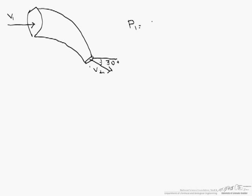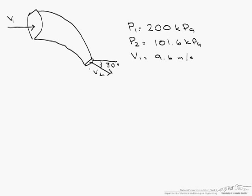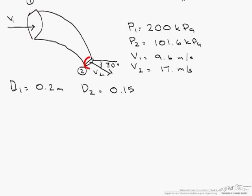Let me remind you of some of the things that we already calculated or were given to us. Our P1 was given as 200 kPa, and we calculated P2 using Bernoulli's as 101.6 kPa. Our V1 was 9.6 m/s, where we started with a mass flow rate of 300 kg/s. Our V2 is 17 m/s. The diameter at section 1 is 0.2 m, the diameter at section 2 is 0.15 m, and theta is 30 degrees.